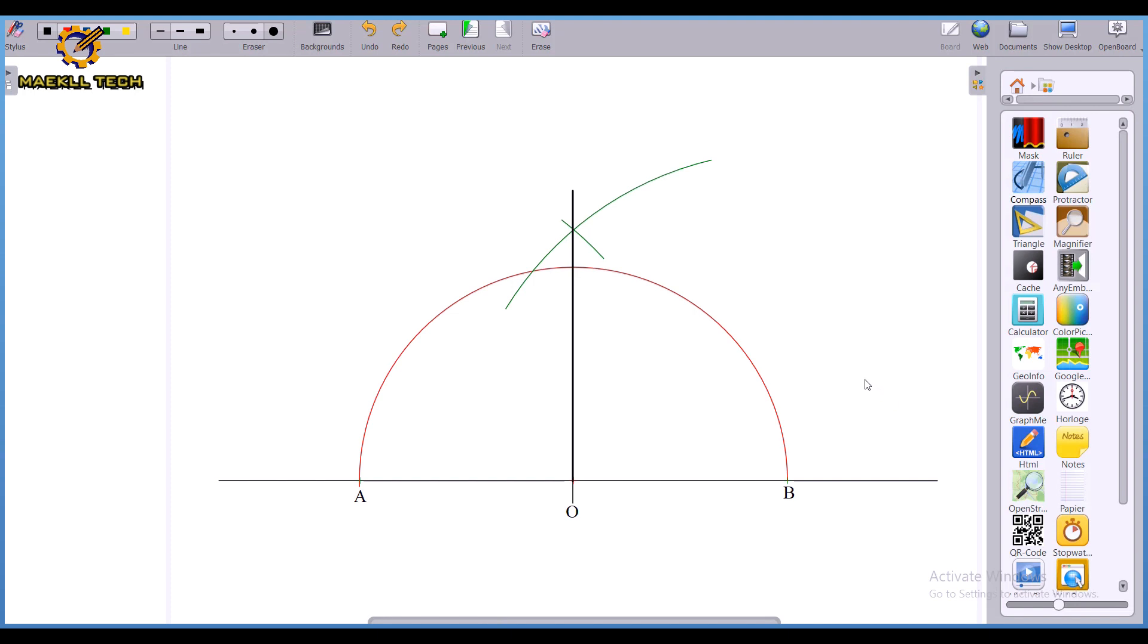So today we will be considering angle 45 degree. So as you all know, the angle from this junction all the way down here to B is 90 degrees. And if I divide 90 degrees by 2, I will be having 45 degree.